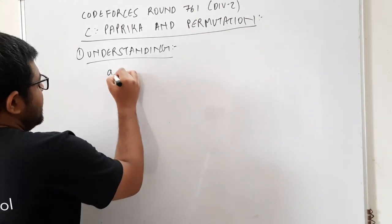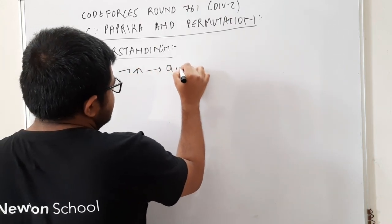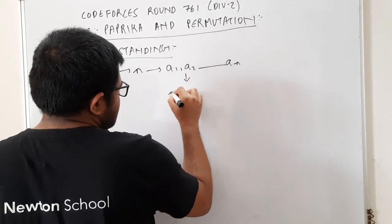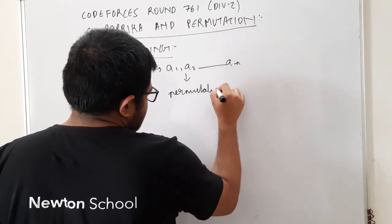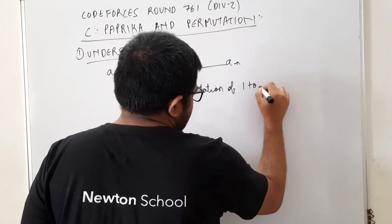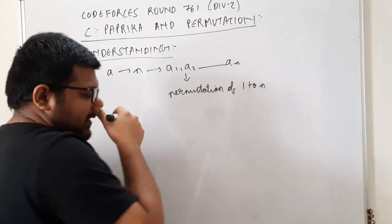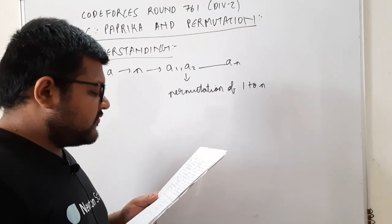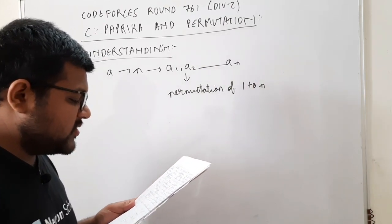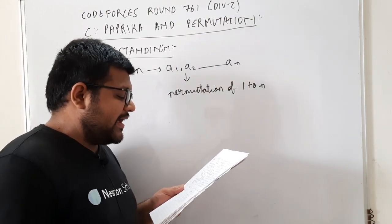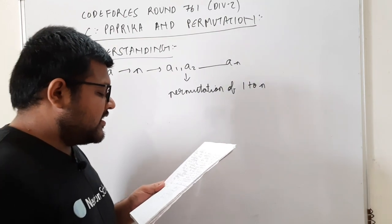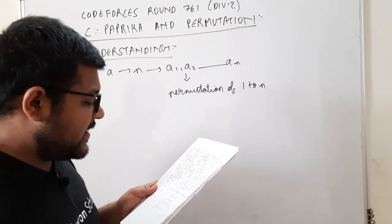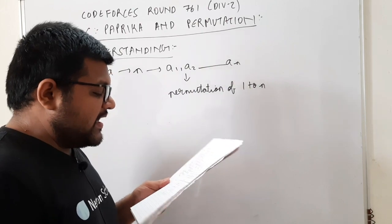क्या बोला गया है कि Paprika के पास एक array A है जिसकी size N है और elements हैं A1, A2 up to AN। वो इस array को 1 to N के किसी भी permutation में convert करना चाहती है। In one operation, she can choose two integers I (from 1 to N) and X (greater than 0), and perform AI = AI mod X — replace AI by the remainder of AI divided by X. Different operations can use different I and X values.